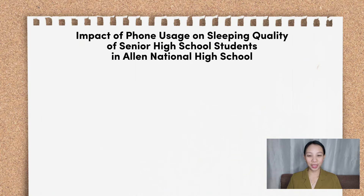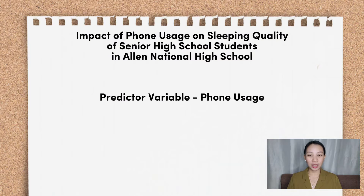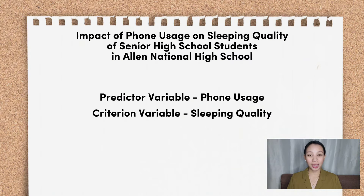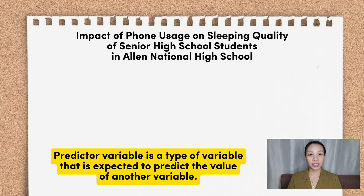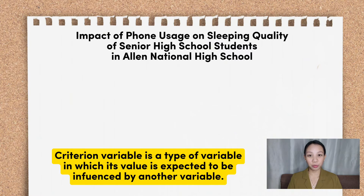Let us first identify the predictor and criterion variables in the research title. The predictor variable is phone usage, and the criterion variable is sleeping quality. A predictor variable is a variable that is inspected to predict the value of another variable. Meanwhile, a criterion variable is a type of variable whose value is expected to be influenced by another variable.